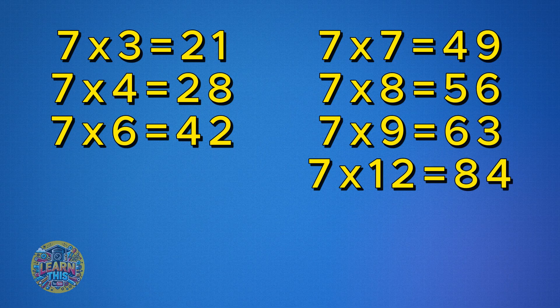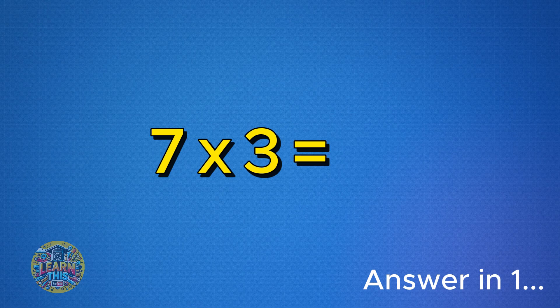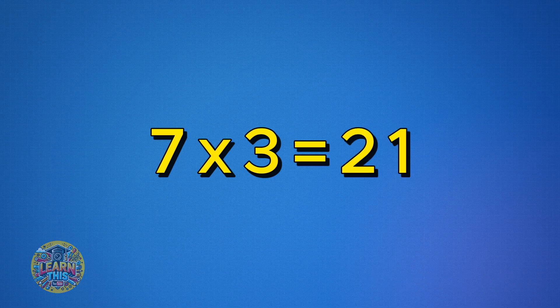Okay, let's see how many you can remember. Don't worry if you don't get them all — that's why we're practicing. I'll put up an equation and you say the answer. Try to go off memory rather than counting on your fingers. I'll give you about five seconds per question, but if you need more time just pause the video. Ready? Let's get started. Seven times three is 21.